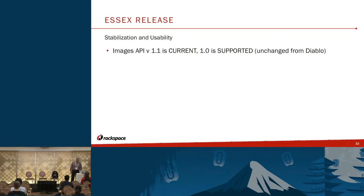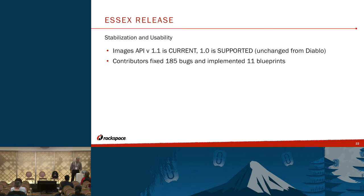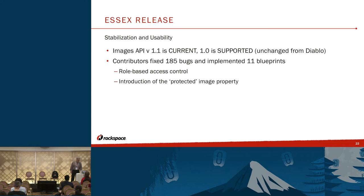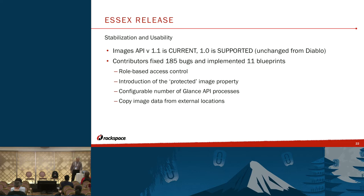In Essex, the focus was on stabilization and usability. The API stays unchanged from the previous release, with 1.1 as current and 1.0 supported. Contributors fixed 185 bugs and implemented 11 blueprints. Features included introduction of role-based access control, introduction of protected image properties so you wouldn't delete things by mistake, configurable number of API processes, implementation of the copy-from functionality, and an image upload progress bar in the Glance command line interface.